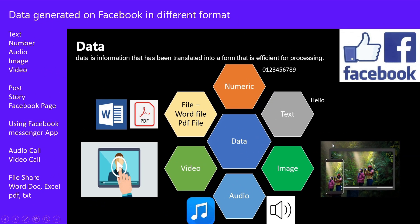The next question is: which types of data are available on Facebook? Obviously there is numeric data, text, images, audio, video. We can also share files over Facebook Messenger. There are stories we can post, and lots of images and videos are available on Facebook.